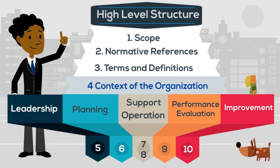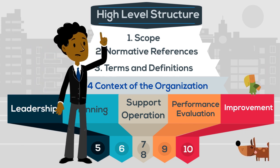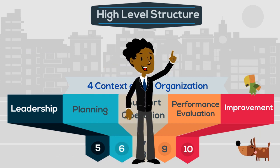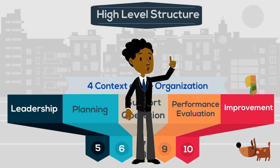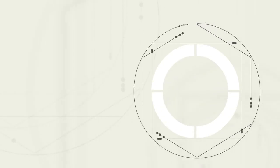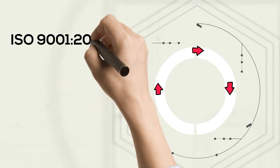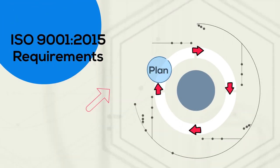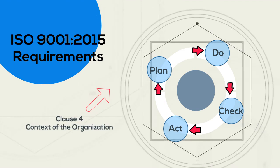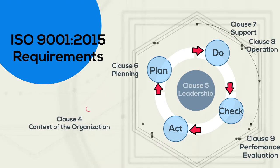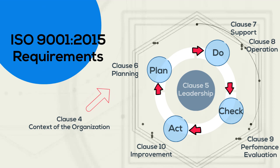Clauses 4 through 10 are the only clauses which have specific requirements that the organization needs for an implementation. The best way to view the ISO 9001 Quality Management System requirements is through a Plan, Do, Check, Act approach. As the picture shown below illustrates, the separate processes are being linked in one large cycle for its improvement.